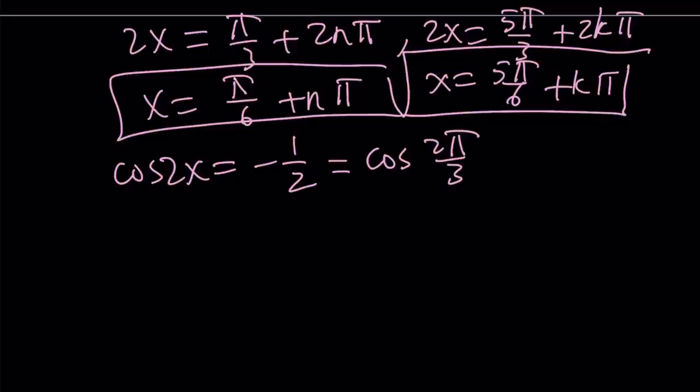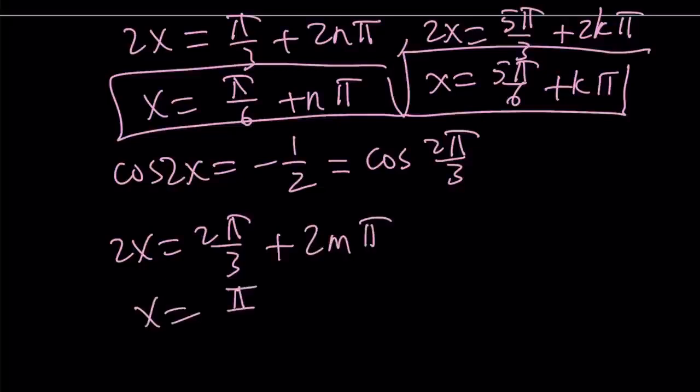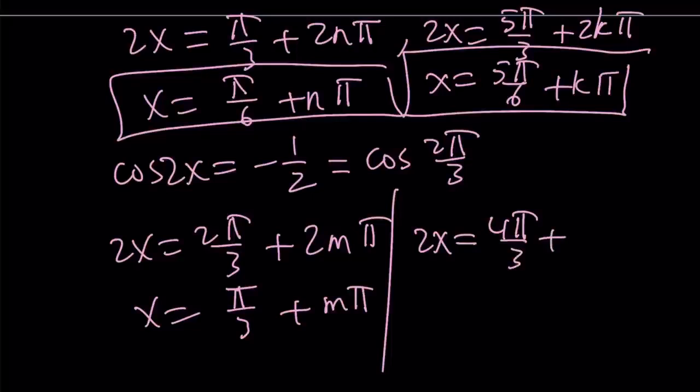So from here, we should be getting something like this. 2x is equal to 2 pi over 3 plus 2n pi. And x equals pi over 3 plus m pi. And also, 2x can equal 2 pi minus that. So that's going to be 4 pi over 3 plus, let's say, which variable should we use? Maybe n, k, l, m, n, p, q, r. I don't know. Let's just use r.